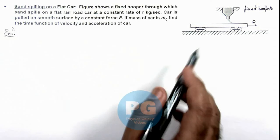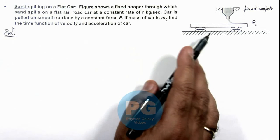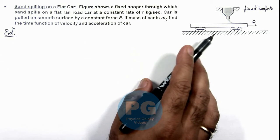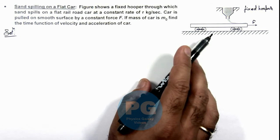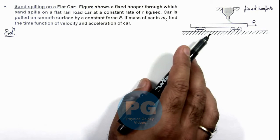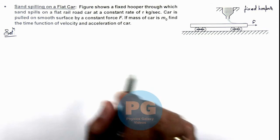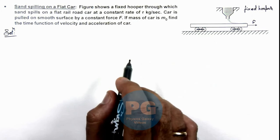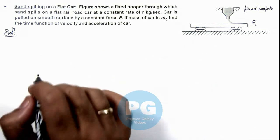In such cases of mass variation, we have discussed that the best way to solve such problems is to apply impulse momentum equation at an intermediate time t and t plus dt, which we have analyzed in detail in concept videos. In this illustration we do the same.